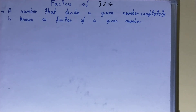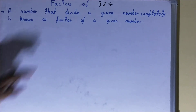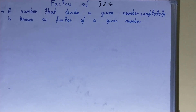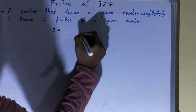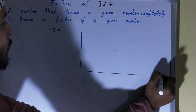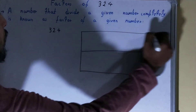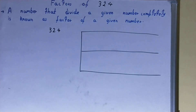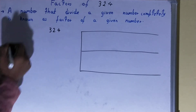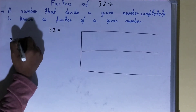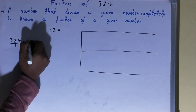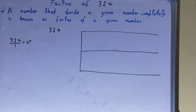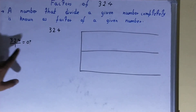Hello friends, in this video I'll be helping you with the factors of the number 324. To find them, you need to write the number and draw a factor table. Start with the lowest natural number, which is 1. Divide 324 by 1 — the remainder is zero, so 1 is a factor of 324.